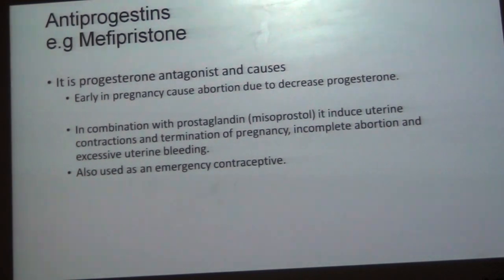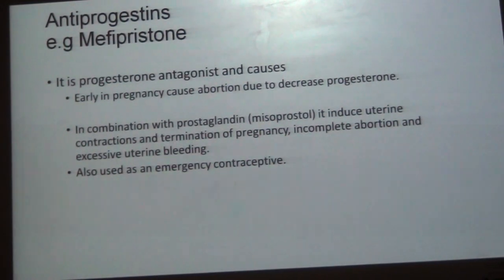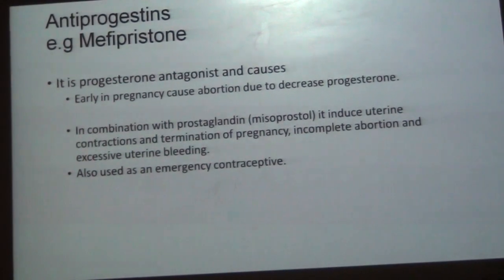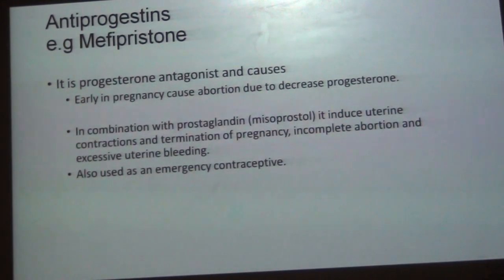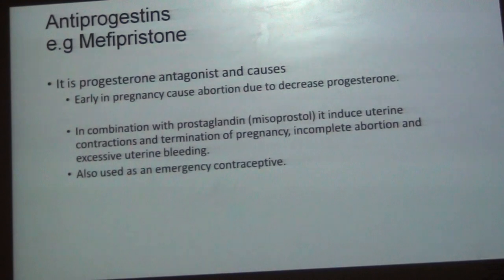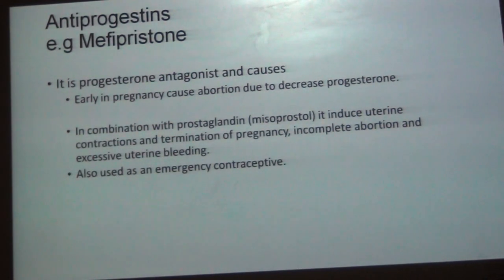The next class is anti-progestins, or mifepristone. It is a progesterone antagonist and, if given early in pregnancy, it will cause abortion due to decreased progesterone. If given in combination with prostaglandins, the drug is known as misoprostol and is used in inducing uterine contraction and termination of pregnancy. However, side effects include incomplete abortion or excessive uterine bleeding. It is also used as an emergency contraceptive.